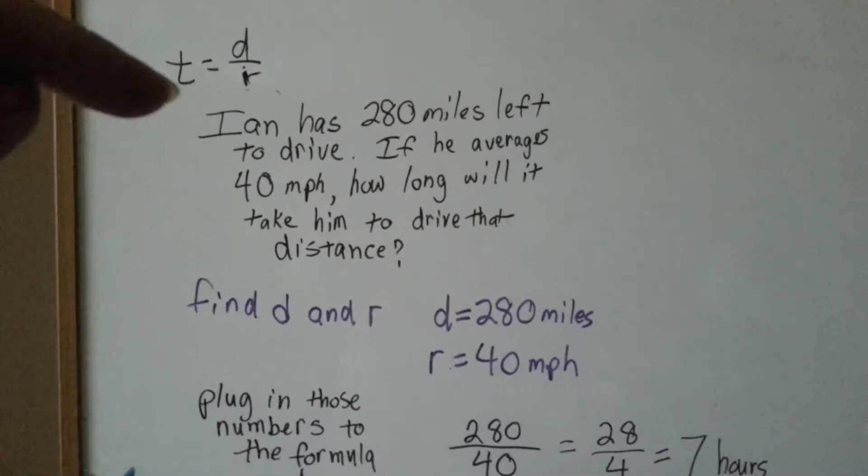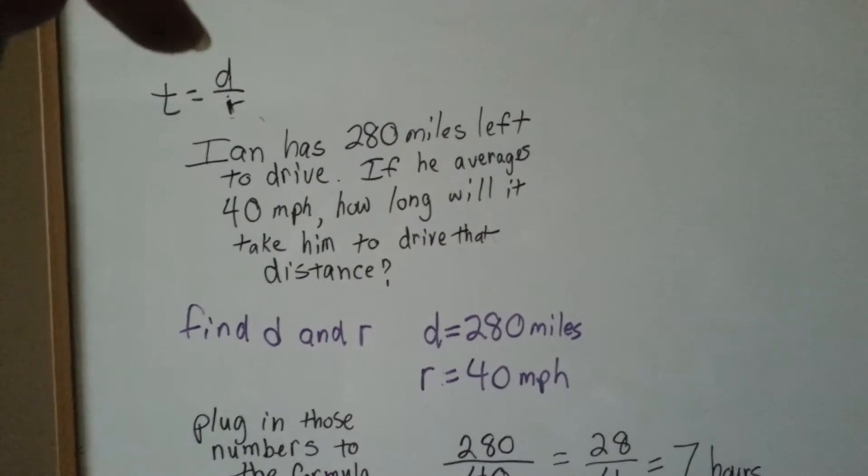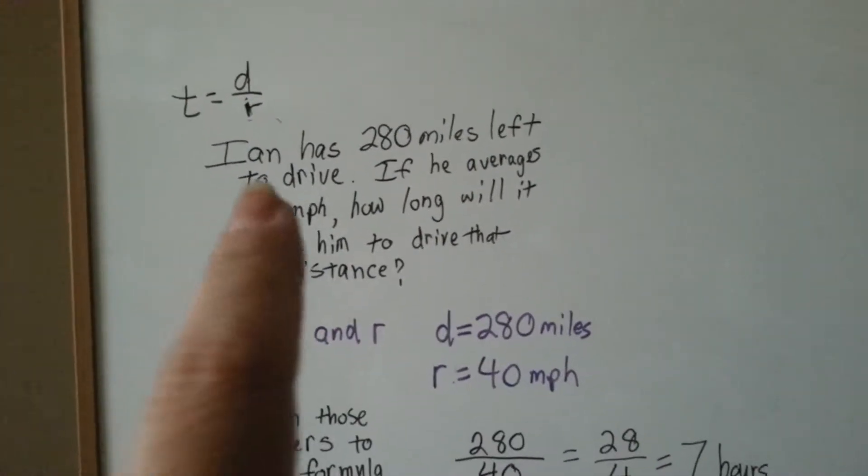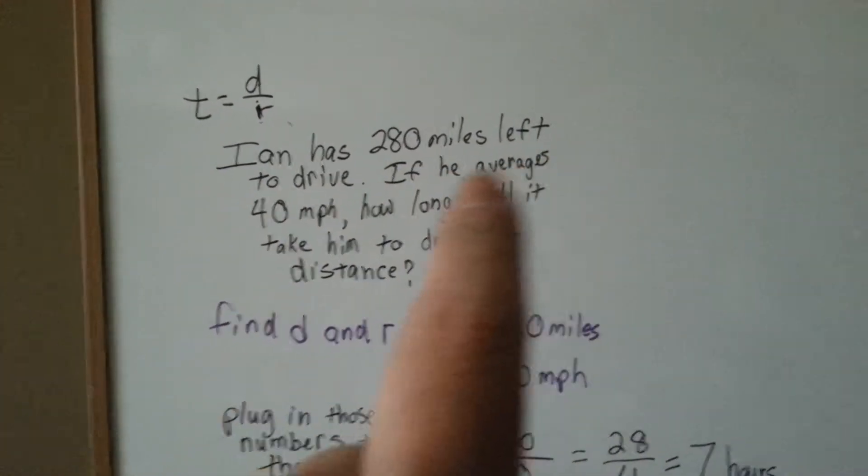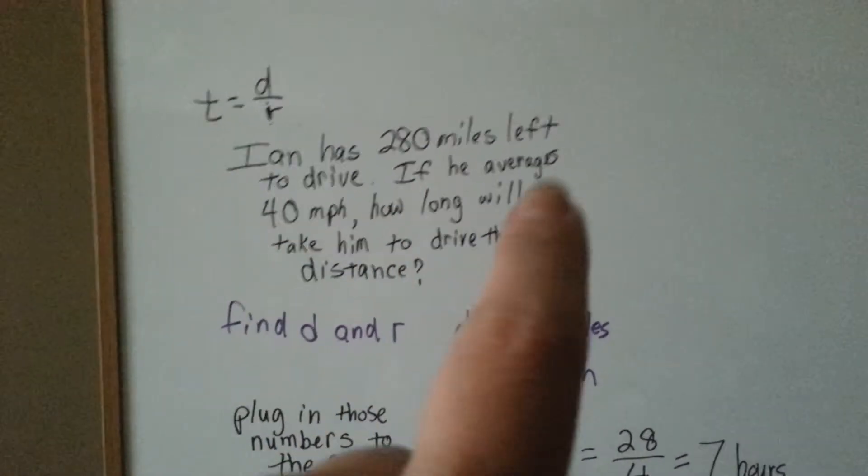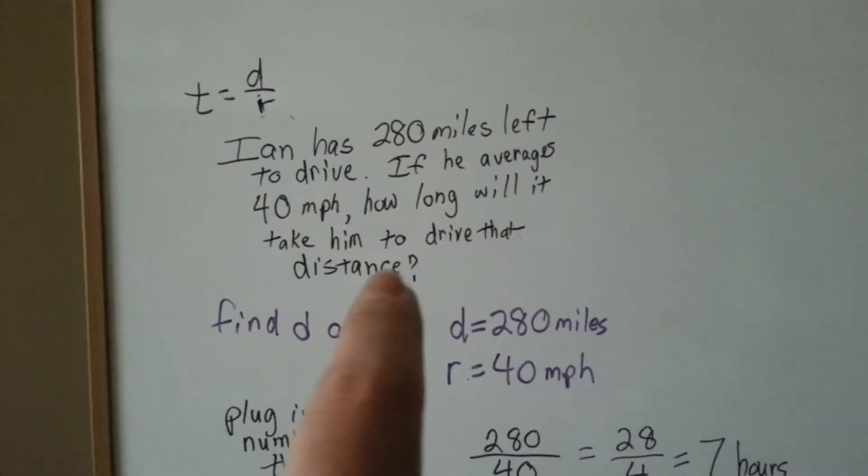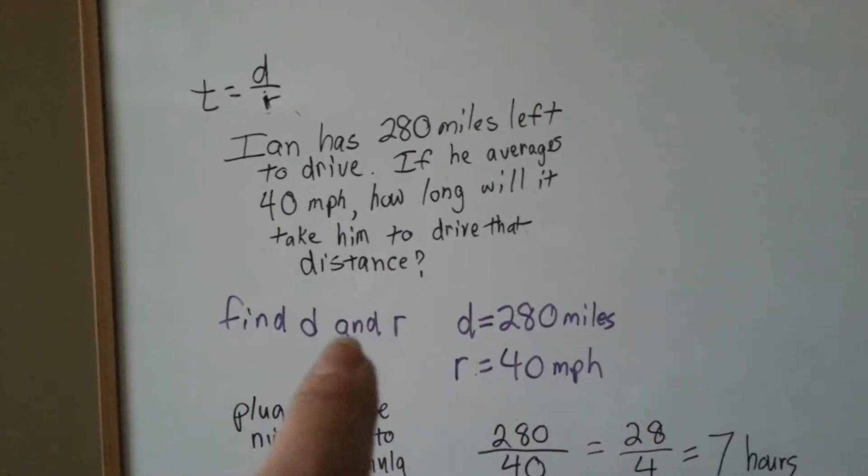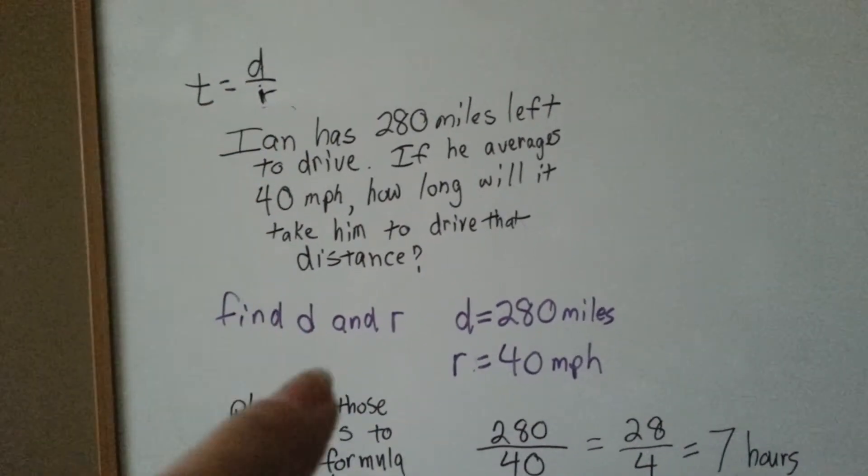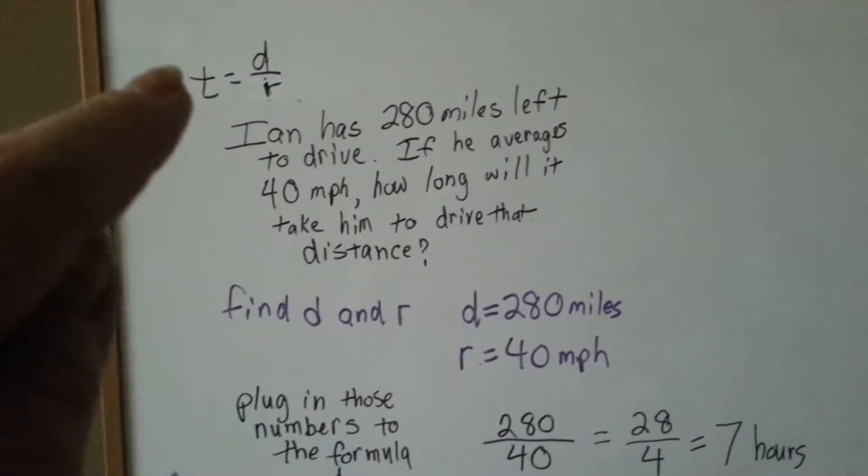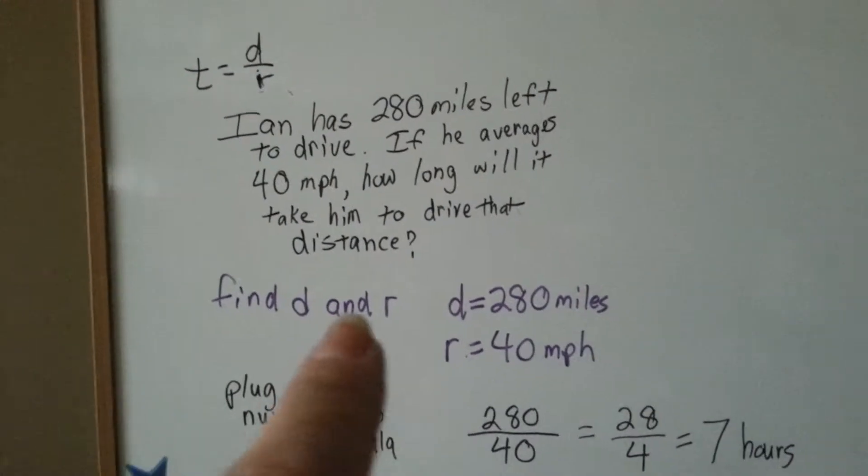Okay, now we need to find the time. So we're going to divide the distance by the rate. Ian has 280 miles left to drive on his trip. If he averages 40 miles per hour, how long will it take him to drive that distance? So now we need to find the D and the R so we can divide them and that will tell us the T, the time. Well, the distance he drove or needs to drive is 280 miles.